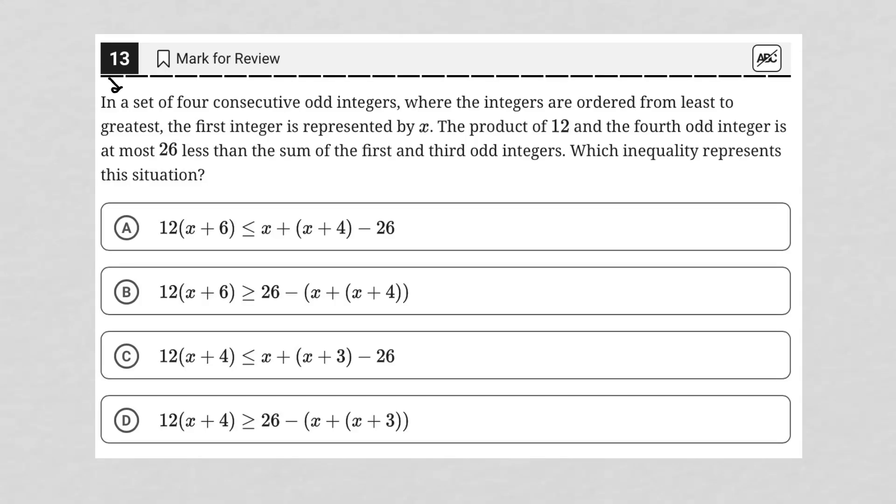So this question says, in a set of four consecutive odd integers, where the integers are ordered from least to greatest, the first integer is represented by X. So I'm going to just write down my translation for that. I'm going to treat this like a translate word problem question, which means I'm not going to just keep reading. I want to make sure I understand what I read before I move on.